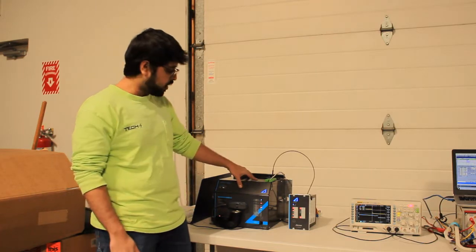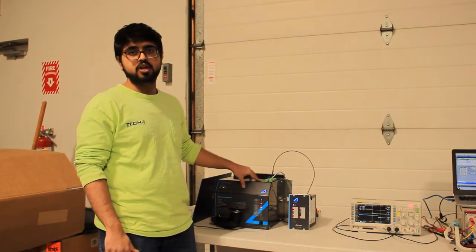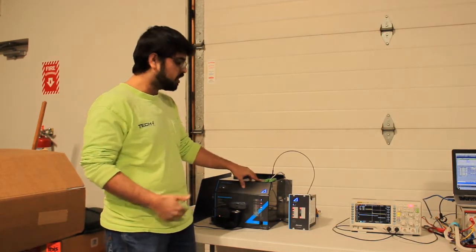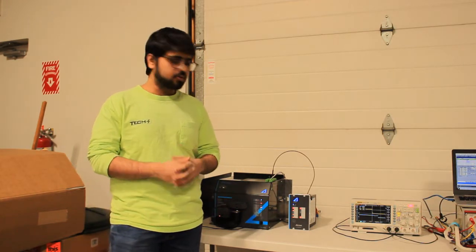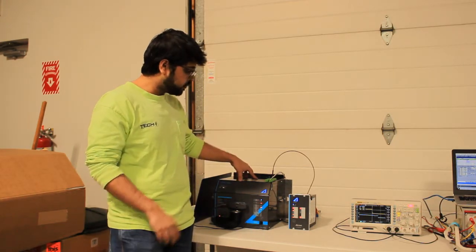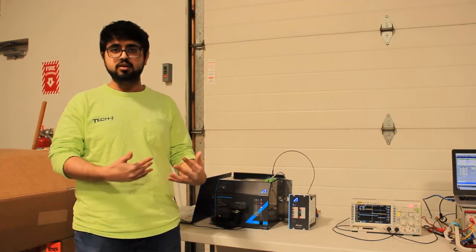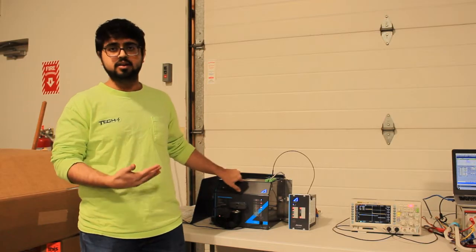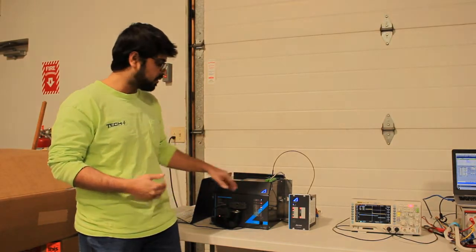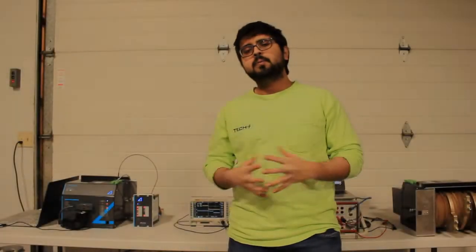So Arteche has built in a commissioning mode which is used for testing. The AQ-1000 knows it's not under load and it's not in use, so it bypasses the trip count. So that was a demonstration of how to time test an arc quencher, and that's how we do it here at Tech Four.